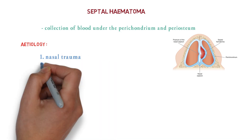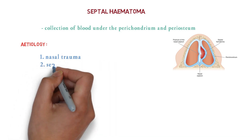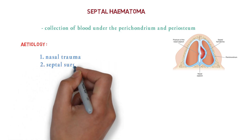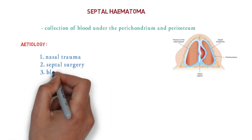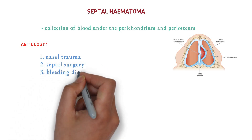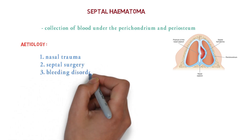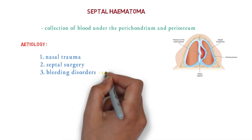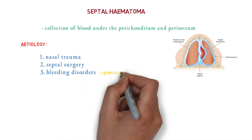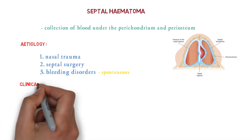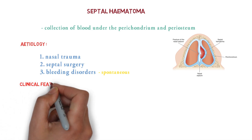What are the etiological factors causing septal hematoma? It can be caused due to nasal trauma or septal surgeries. It also occurs in bleeding disorders, and in bleeding disorders it may occur spontaneously.